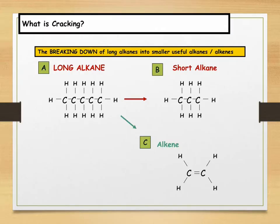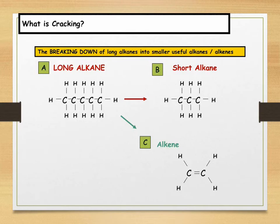Shorter chain hydrocarbons are flammable and make good fuel, so they are much higher in demand. Long chain hydrocarbons aren't that useful, so often they are turned into smaller, more useful ones in a process called cracking. Cracking is the breaking down of long chain alkanes into smaller, useful alkanes, as well as alkenes.